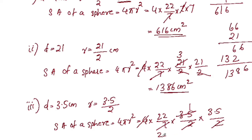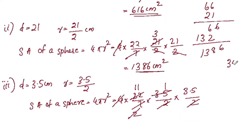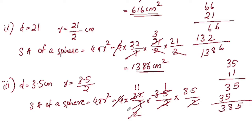We cut 2 into 22, giving 11. Then 11 into 35. Continuing: 3, 3, 85. We get the decimal point, so the result is 38.5 centimetre square.